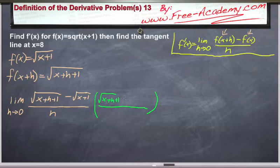So square root of (x+h+1), this would be plus the square root of (x+1). And then of course you divide the bottom by the same thing.